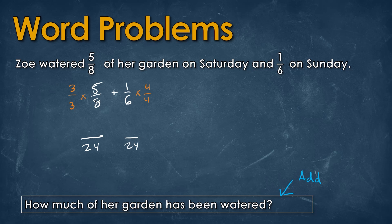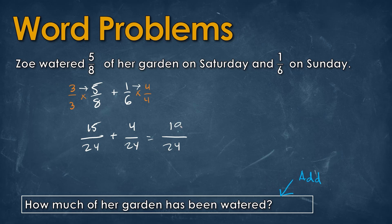Multiplying 3 by 8 gives us 24 on the bottom, and 5 times 3 on the top gives us 15. For the second fraction, 4 times 6 on the bottom gives us 24, and 1 times 4 on the top gives us 4. Adding these fractions, we keep the same denominator of 24 on the bottom. Adding the numerators 15 plus 4 gives us 19, so the final answer is 19 over 24.